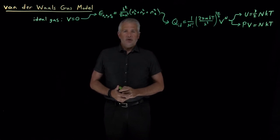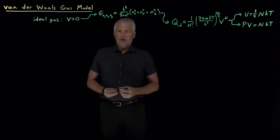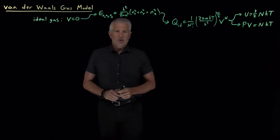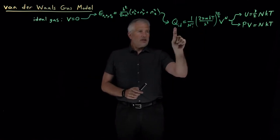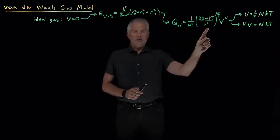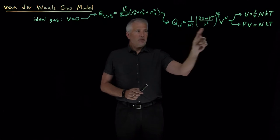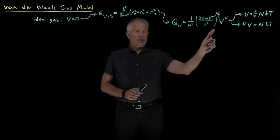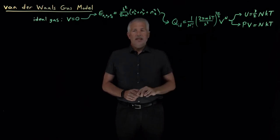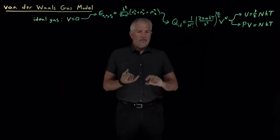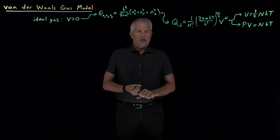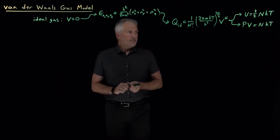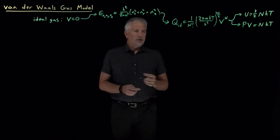We can also consider a somewhat easier approach, which is to jump to a later stage in this process and look at something like the partition function and ask what it would look like if we didn't assume zero molecular volume and zero intermolecular interactions. So that's what we can do.